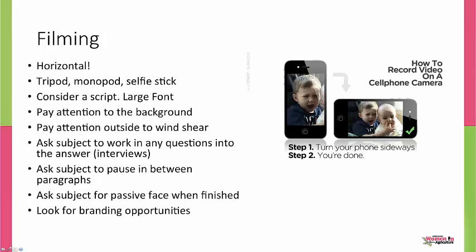If you are interviewing someone, I often ask them a question and they answer me. So if I say, 'Tracy, how long have you been in cooperative extension?' and her answer is '15 years,' I plan on editing my questions out — then her response has no context. So when you're interviewing someone and you plan to take yourself out of the equation, it's important that the person you're interviewing works the question into their answer so there's context. Also ask them to pause in between their statements or paragraphs — people get nervous with a camera. If they mess up, you can edit where there's been a natural pause, cut that out, and start over from that point.